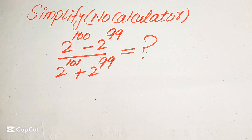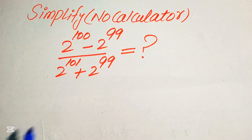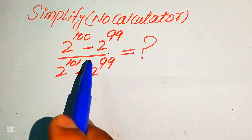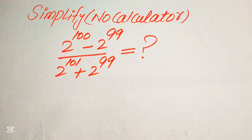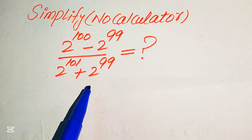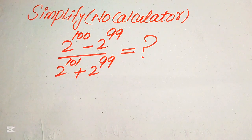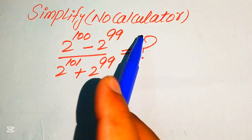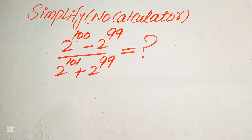Hello everyone. How to simplify this nice algebraic expression: 2 to the power of 100 minus 2 to the power of 99, divided by 2 to the power of 101 plus 2 to the power of 99. Here we simplify this algebraic expression into the lowest form. Note that a calculator is not allowed in this problem, which means we will show all of the working on paper.